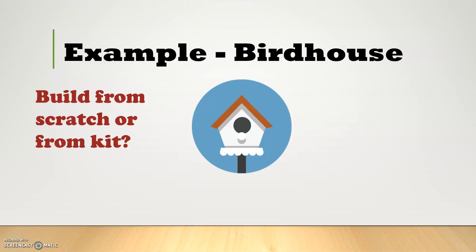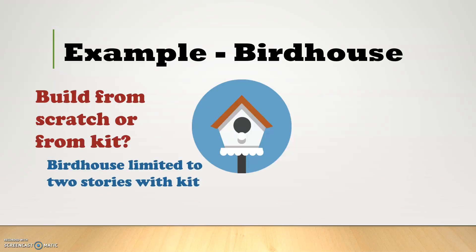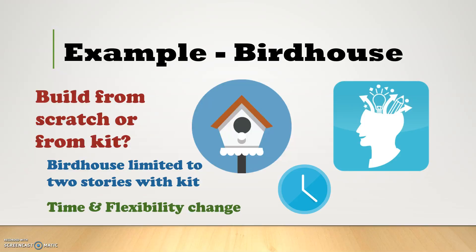The birdhouse kit will provide Fred with a birdhouse that can be modified up to two stories. If Fred builds the birdhouse from scratch, he can build multiple stories. Building from scratch will take an exponential amount of time more than the kit, and there's also a greater chance of failure. Fred must decide if the kit provides enough tools to craft what he wants, and if not possible, he will have to build from scratch.